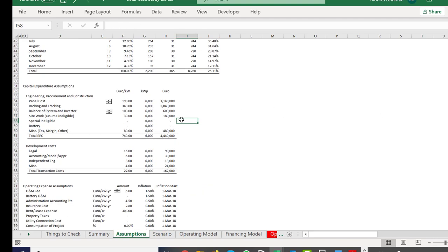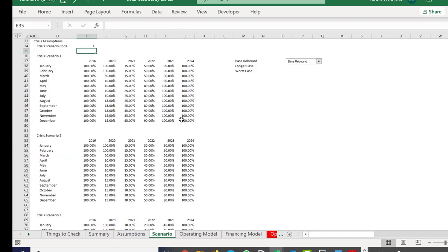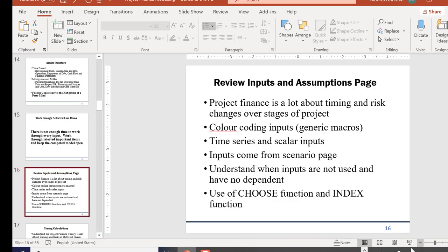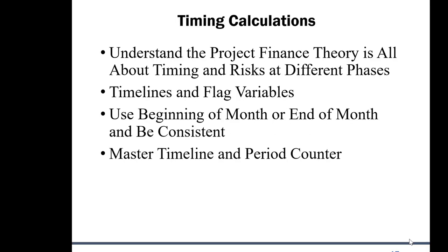We've worked through the inputs. Now I'm moving to the operating cash flow. I want to discuss timing calculations. In project finance it's all about hitting different dates and timings, and the risk goes down after you finish each stage. After the development period - getting permits, government approvals, feasibility, bank commitments - that risk is gone.